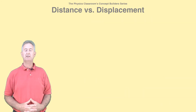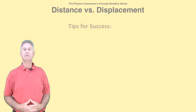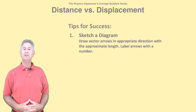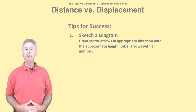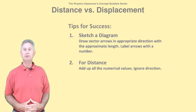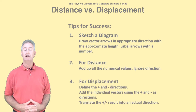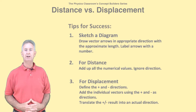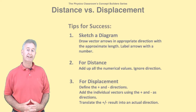Calculating the distance and displacement for a back-and-forth trip involves applying the definitions of these two terms. Here are some tips for success. First, begin by sketching a diagram — draw vector arrows in the appropriate direction and of the approximate length, and label each arrow with a numerical value. For distance, ignore all directional information and just add up the numbers, because distance is a scalar. For displacement, define the positive and negative direction, then add up the numbers with positive and negative included as directional information. When you're done, translate the positive or negative result into an actual direction, like east or west.